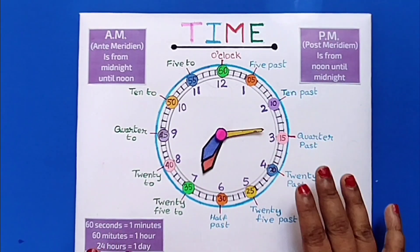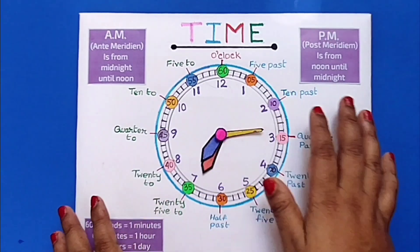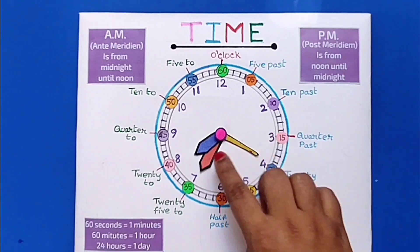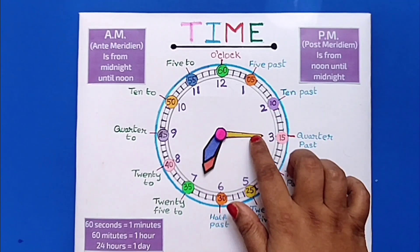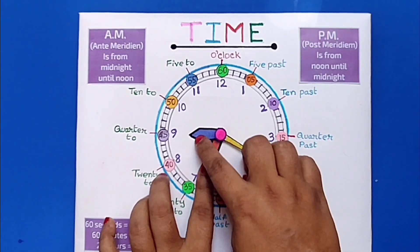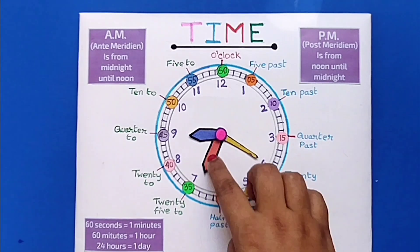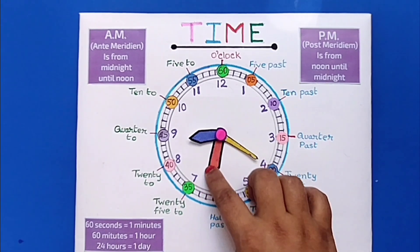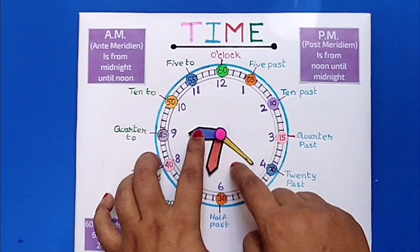I have tried to cover everything about time. A clock has three hands. This is the second hand, the short hand is called the hour hand, and this long hand is called the minute hand.